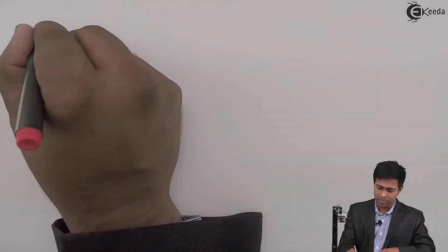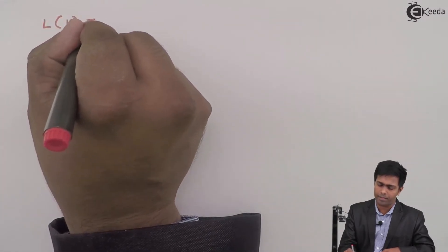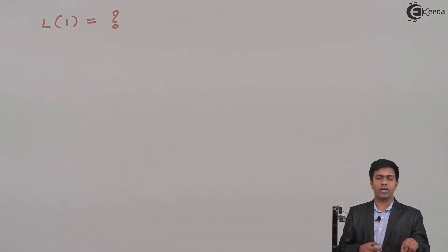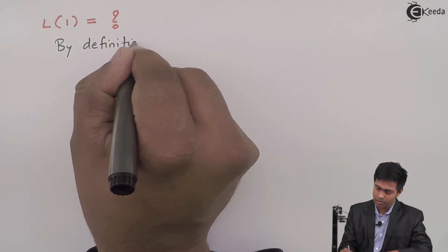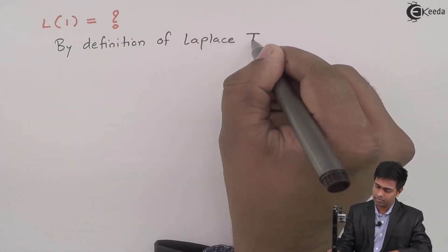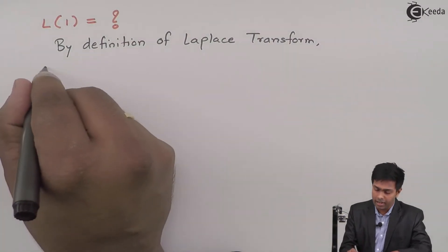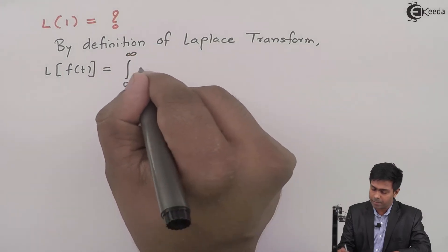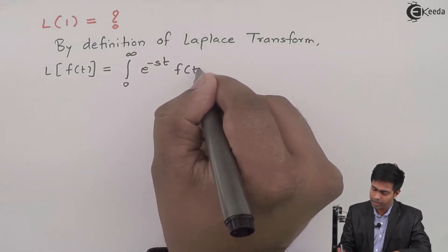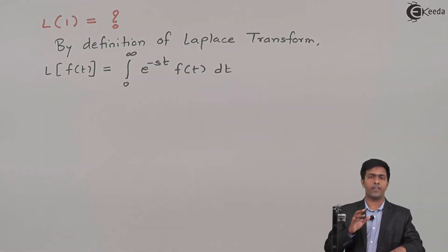Today we are going to see what is the Laplace transform of 1. We are going to derive the formula for Laplace transform of 1 with the help of the definition of Laplace transform. By the definition of Laplace transform, we know that Laplace transform of f(t) is given by the formula: integration from 0 to infinity of e raised to minus st times f(t) dt.